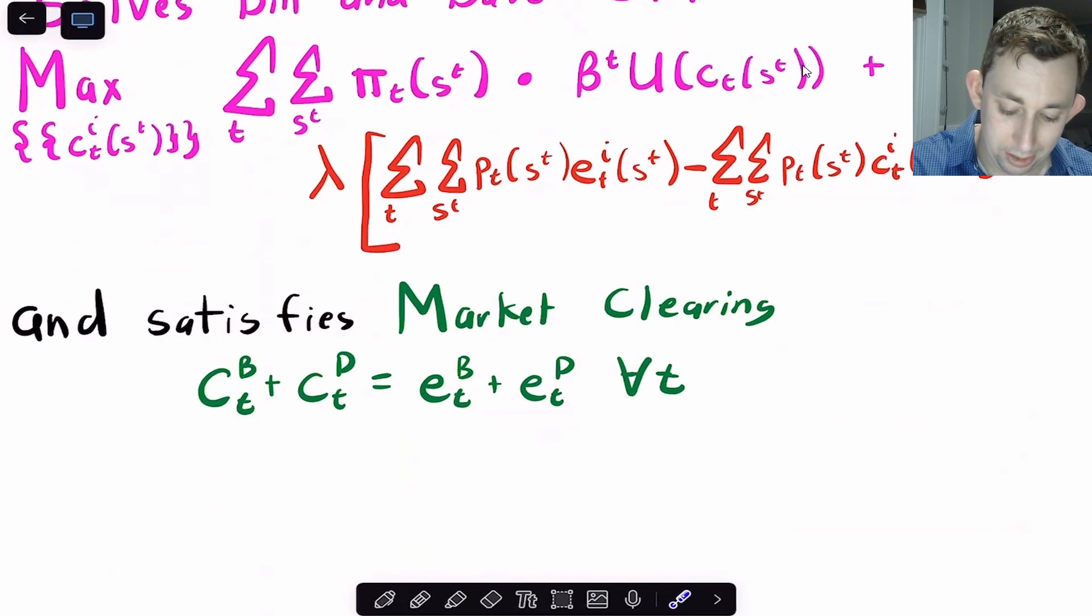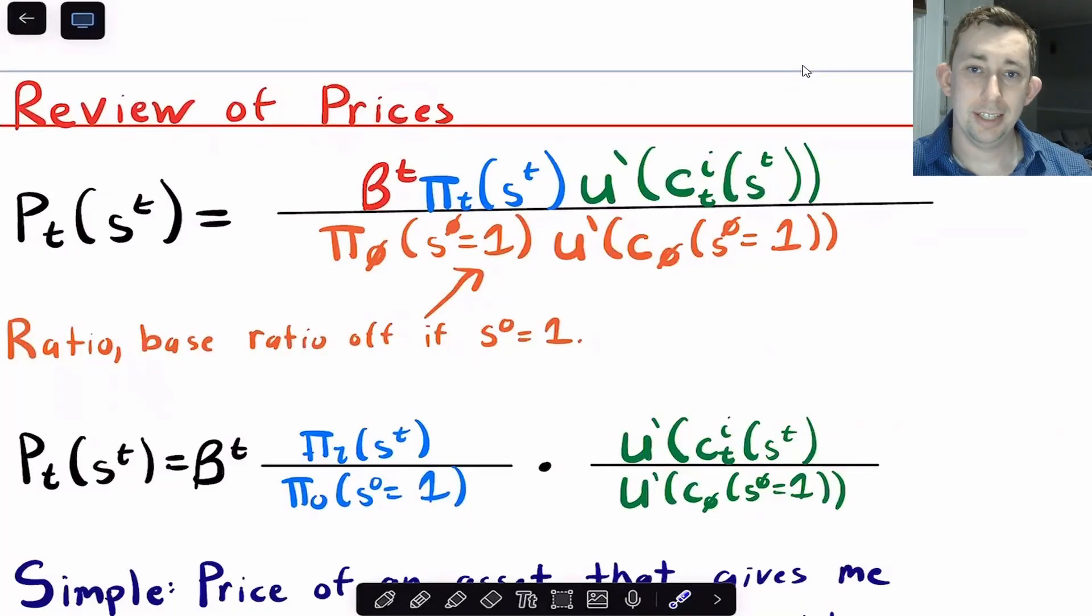And we said, unsurprisingly, that we still have to satisfy market clearing, but you have to satisfy the market clearing in every time T. Now the reason there's no ST here is because that state is going to be realized in each time. And so I think it's helpful just to write it for all T because whatever the state is in given day T, we have to eat all the coconuts that we have in our endowment. So market clearing is basically the same. You might see it as CT, ST, and ET of ST, which is totally fine. This way also works.